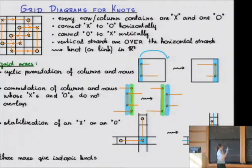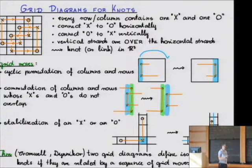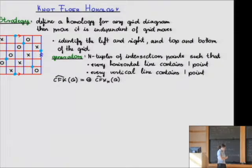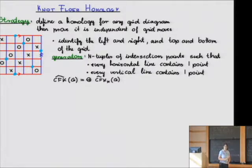Not only do the grid moves give you isotopic knots, but these are the only moves that give isotopic knots in the sense that if you have two grid diagrams giving isotopic knots, they are related by a sequence of those three operations or their inverses. Having this result, one can define any theory using the strategy of defining a theory for any grid diagram and then proving it's invariant under these grid moves.